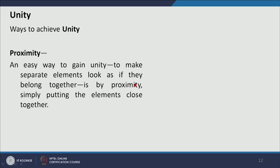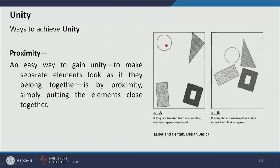One way to achieve unity is proximity. An easy way to gain unity is to make separate elements look as if they belong together. If we arrange different shapes and visual elements together, they look unified. For example, in the first composition A, there are different elements with different colors and textures that are not close together. In the second composition B, they are placed in closer proximity, so we perceive the circle, rectangle, triangle, and other shapes together as a combined unit.